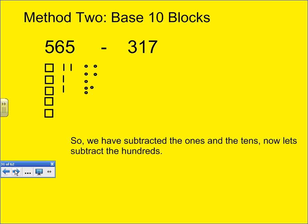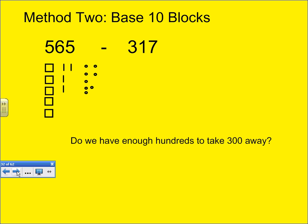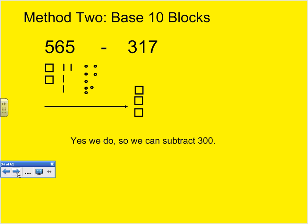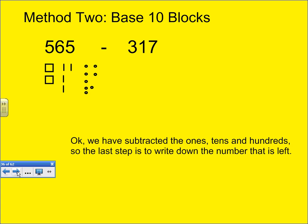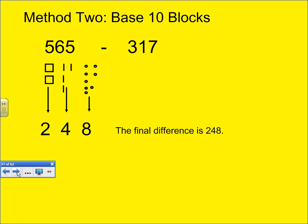Now, let's subtract the 100's. I need to take away 3 of them. I have 5, so I can take away 3, and that leaves me with 2 remaining. So, now that I've subtracted the ones, 10's, and 100's, the last step is to write down the number that's left. Add 2 hundreds, 4 tens, and 8 ones, so the final difference between these two numbers is 248.